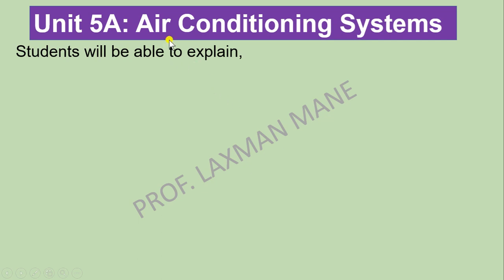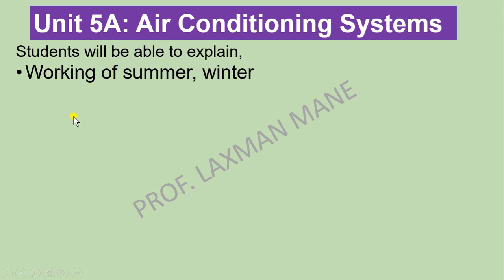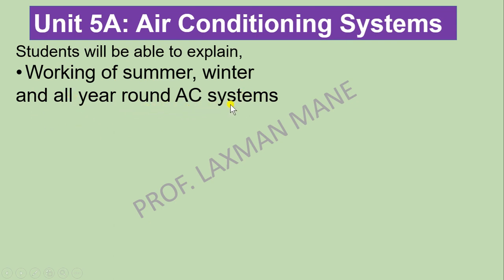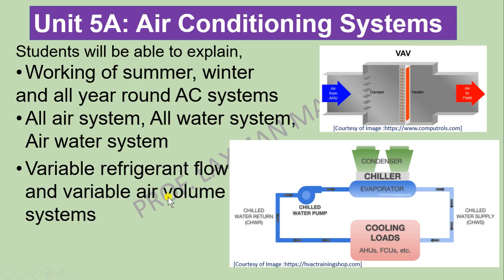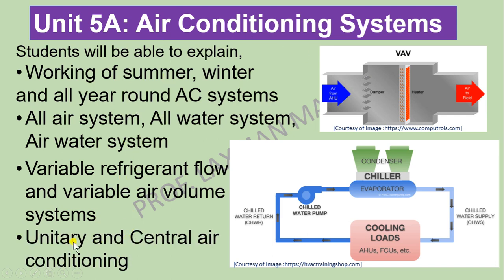Unit 5 has again two parts. Part A is Air Conditioning Systems. In this you will be able to explain the working of summer, winter, and all-round air conditioning systems. Based on the type of medium: all-air system, all-water system, and air-water systems. There are also two types: VRF (Variable Refrigerant Flow) and VAV (Variable Air Volume). Depending upon number of units: unitary (single unit) and central air conditioning systems, which are used for big buildings with capacities above 25 TR (Ton of Refrigeration).